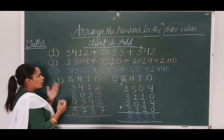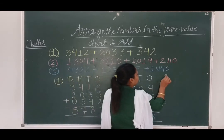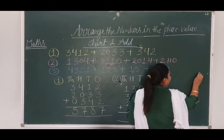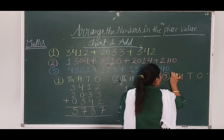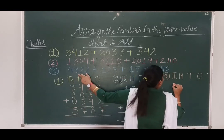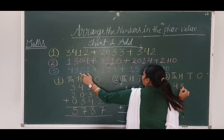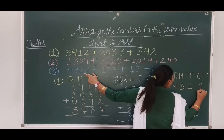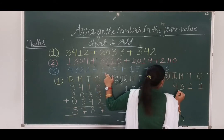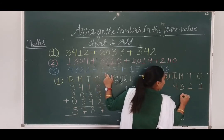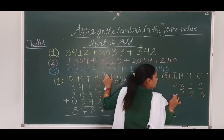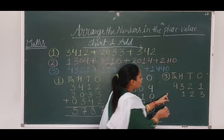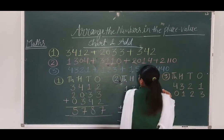Now, same way, third question. Same. Ones, tens, hundreds, thousands. Hundred place, 2, 3. Thousand place has not given. Then, we have to put 0.